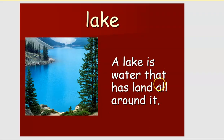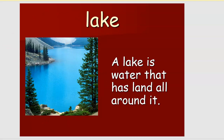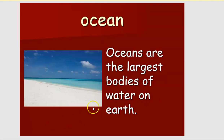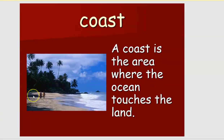What is a lake? A lake is a body of water that has land all around it. You can see there is land all around it. What is an ocean? Oceans are the largest bodies of water on the earth, having the most amount of water.